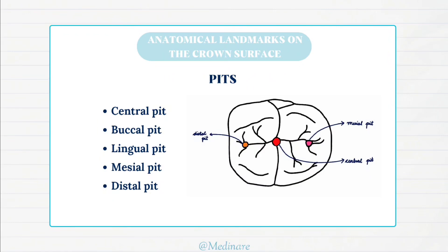The central, mesial and distal pits are present on the occlusal surface of the teeth. The buccal pit and the lingual pit are seen on the buccal and lingual surfaces respectively. The central pit is found in the central fossa on the occlusal surface of premolars and molars, whereas the mesial and distal pit is found in the mesial and distal triangular fossa on the occlusal surface of premolars and molars. The buccal pit is found on the buccal surface where the buccal developmental groove terminates, and the lingual pit is found on the lingual surface where the lingual developmental groove terminates.